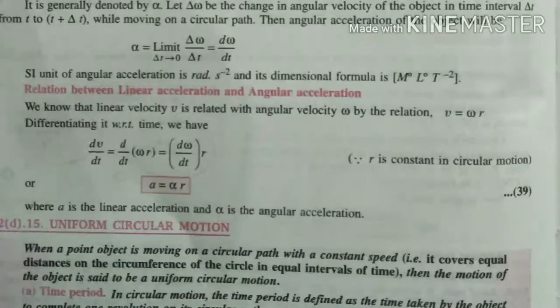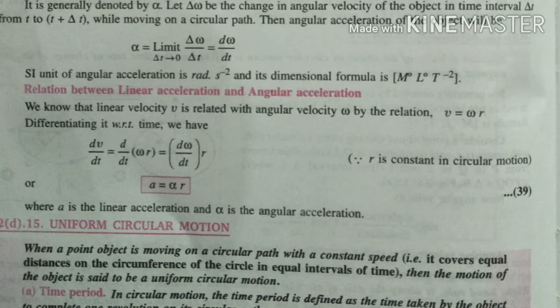If you want to find the relation between linear acceleration and angular acceleration, differentiate v with respect to time: dv/dt equals d(omega r)/dt equals r d omega/dt. This gives a equals alpha r, where a is linear acceleration and alpha is angular acceleration.